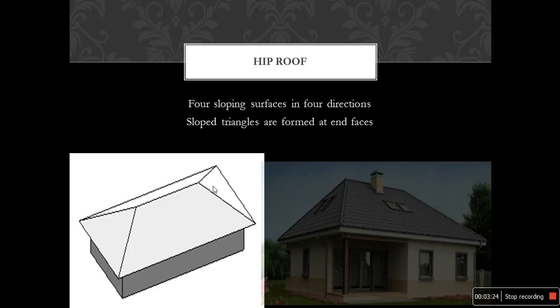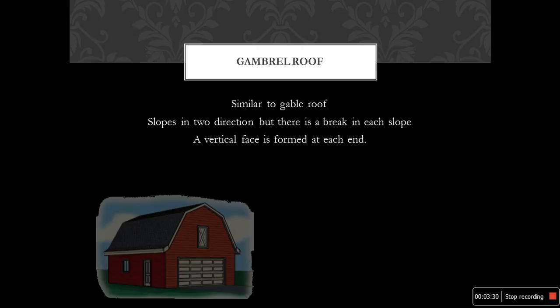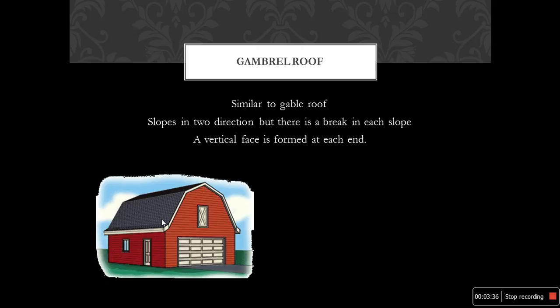Gambrel roof is similar to a gable roof with slopes in two different directions, but there is a break in each slope. Instead of a regular slope, there will be a break in each slope, and a vertical face is formed at each end. This is an example of a gambrel roof.